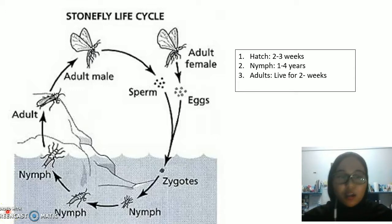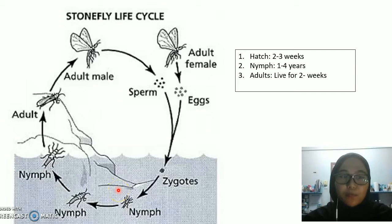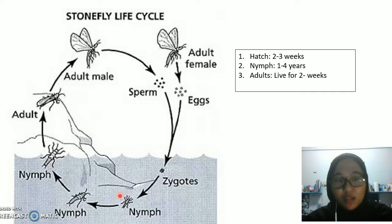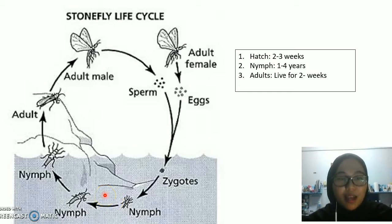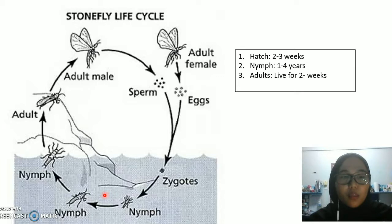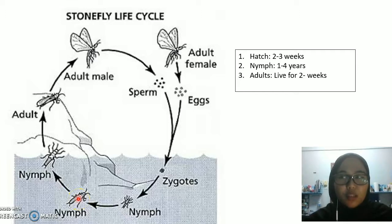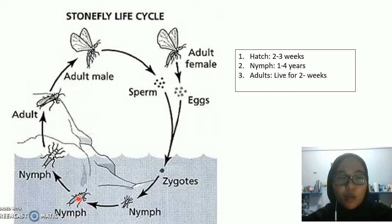Next, the stonefly nymph stage. After the eggs develop into nymphs, stoneflies can take anywhere from 3 months to 3 years to mature. During this time they pass through stages known as instars. As the nymph grows, it sheds its exoskeleton; each period of shedding marks the end of an instar stage. Depending on the species, the nymph may undergo anywhere from 12 to 23 instars. As maturity approaches, the stonefly nymphs make their way to the water's edge and prepare to emerge.